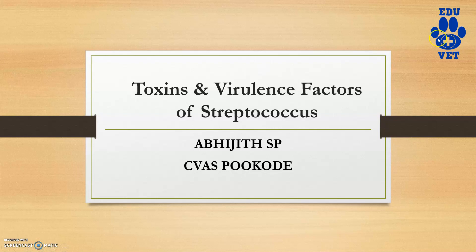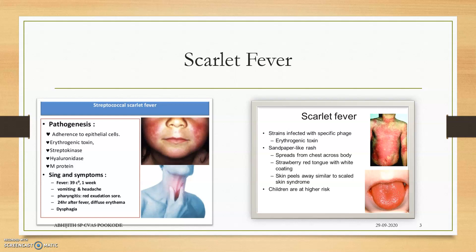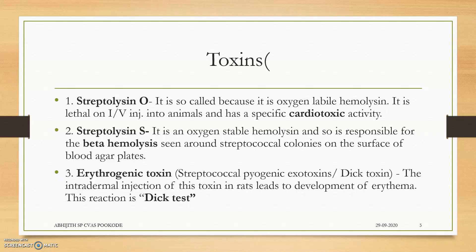Mainly the toxins are erythrogenic toxins, also referred to as streptococcal pyrogenic exotoxins. Scarlet fever is actually due to the toxin called erythrogenic toxin or the Dick toxin. The test to find scarlet fever is called the Dick test or the erythematous skin test.